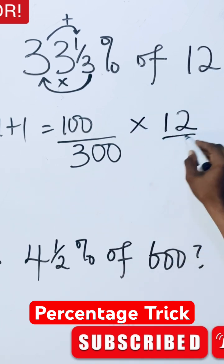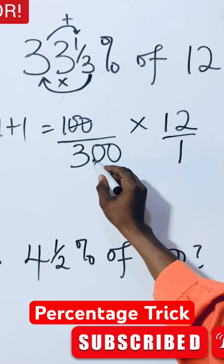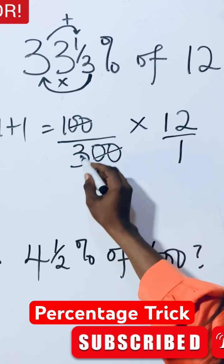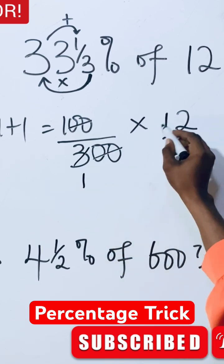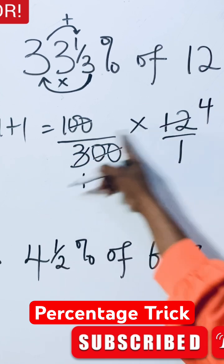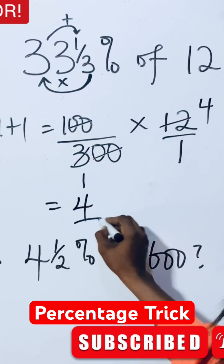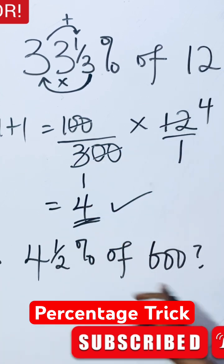So these two zeros cancels these two zeros. 3 goes in itself once and goes in 12 four times. So our answer is going to be 4 as an answer. What do you think about this?